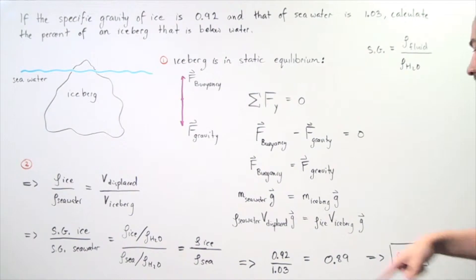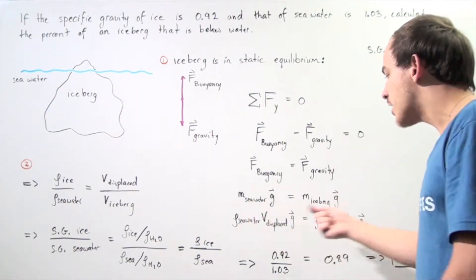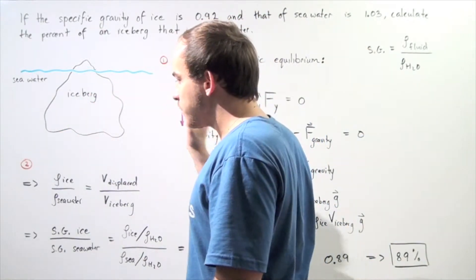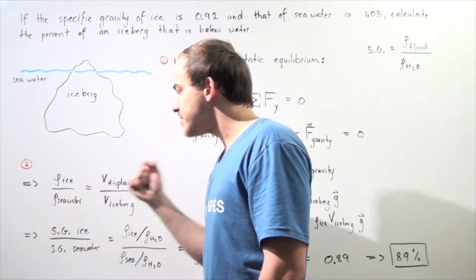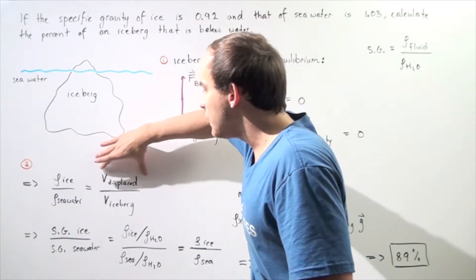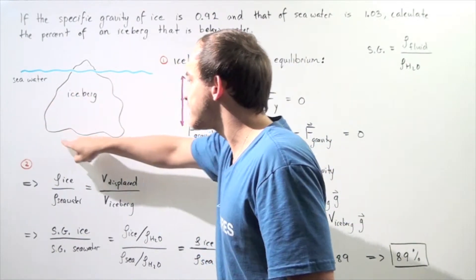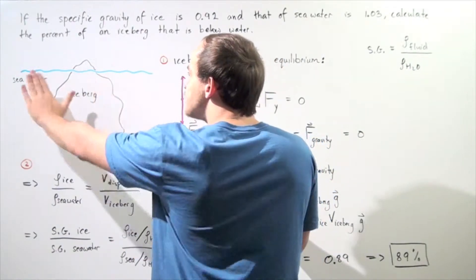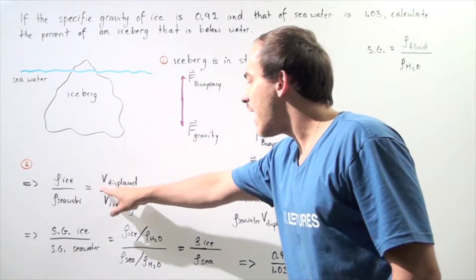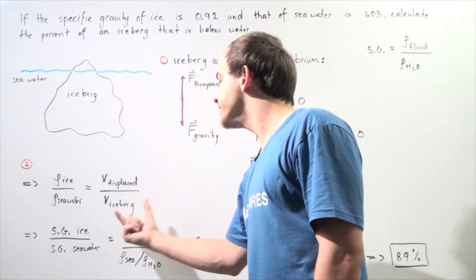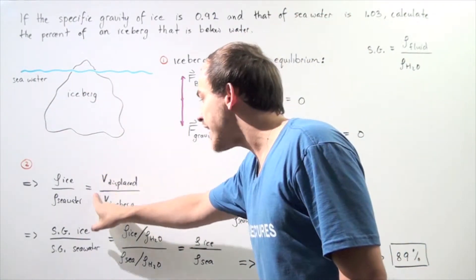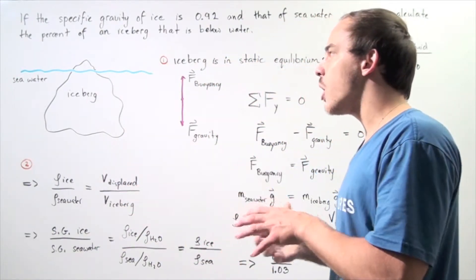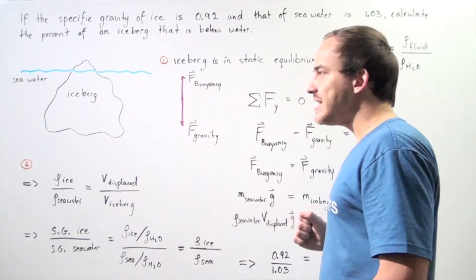After canceling the g's and rearranging, we get the following result: the ratio of the density of ice to the density of seawater is equal to the volume of seawater displaced — equivalent to the volume of the portion of the iceberg below seawater — divided by the entire volume of the iceberg. This ratio is exactly what we're looking for, as it gives us the fraction of the iceberg that is below seawater.